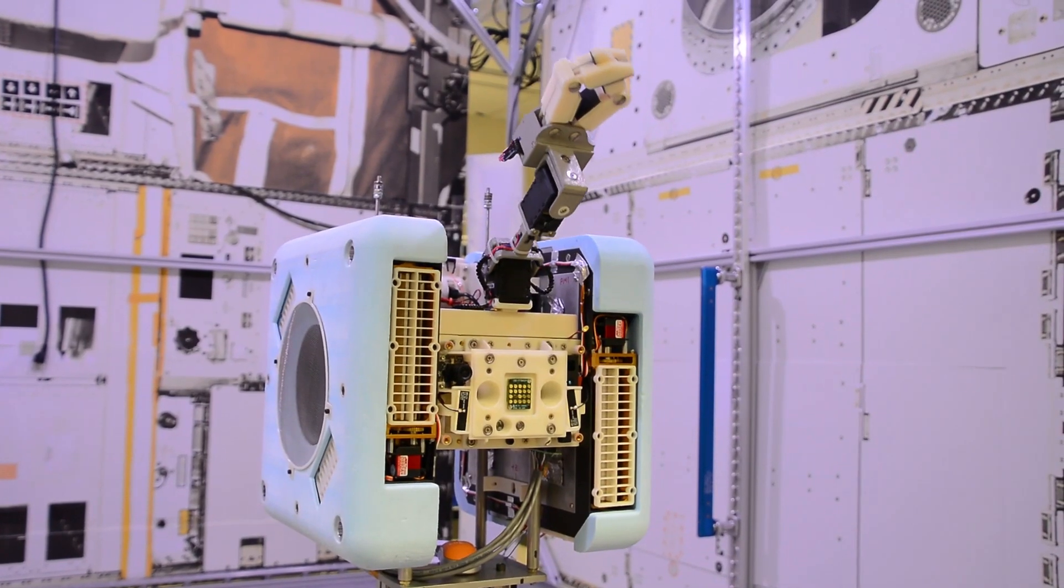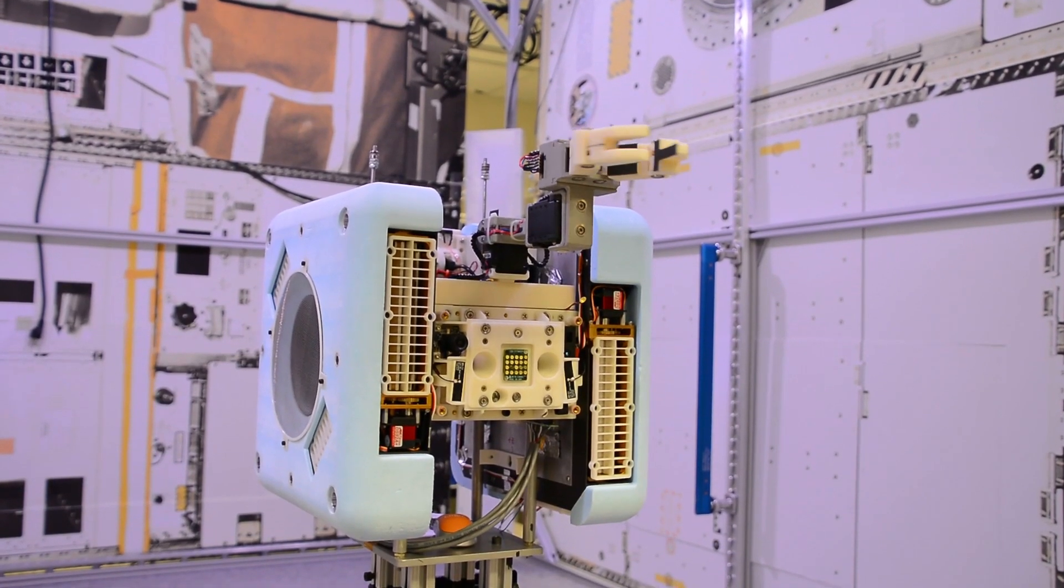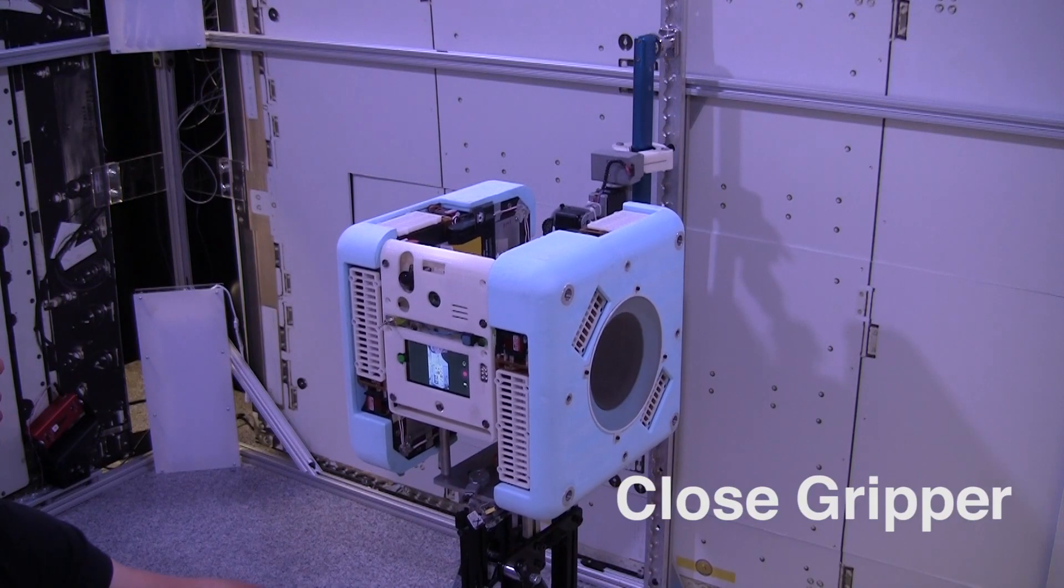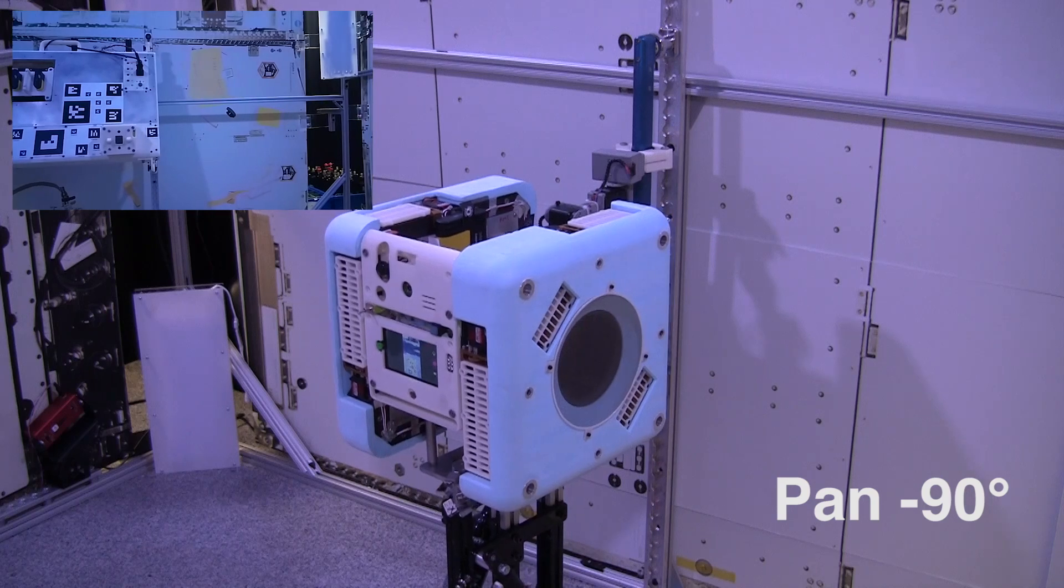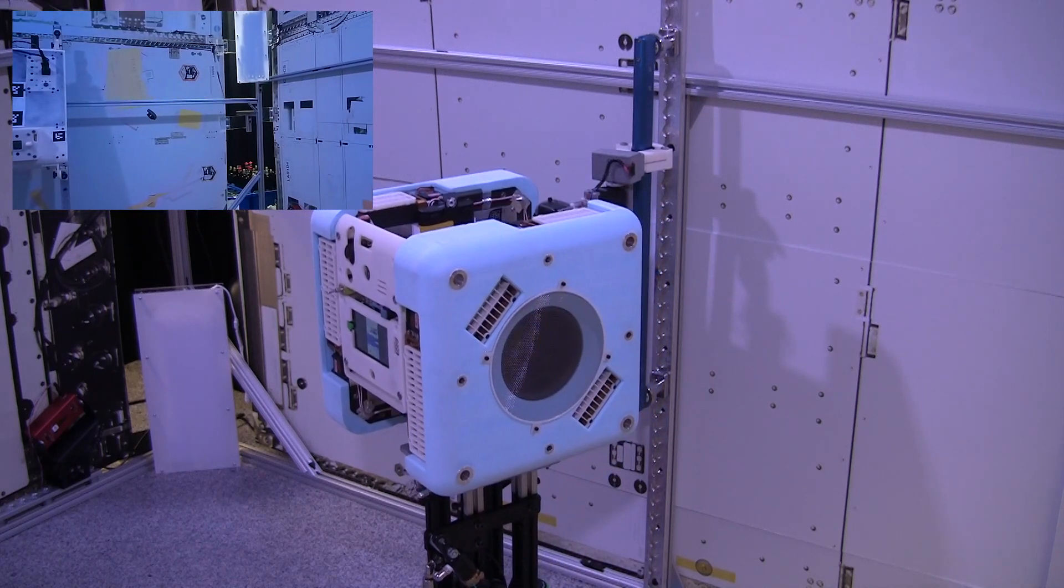So the perching arm is designed to grasp onto ISS handrails. You can see how the fingers of the arm open. Once it grabs onto a handrail, it uses its two degrees of freedom to provide a pan-tilt motion for the camera, the scicam that we talked about on the front side of the robot.